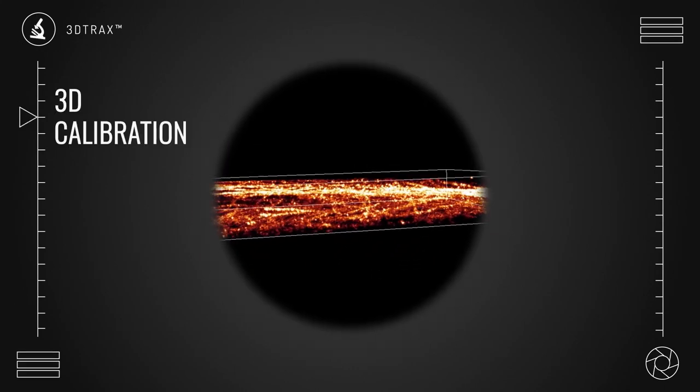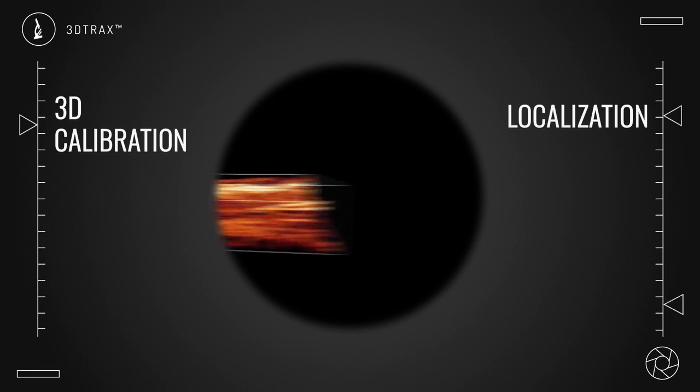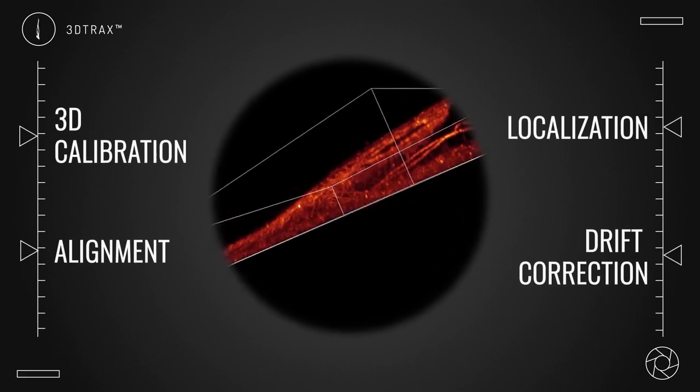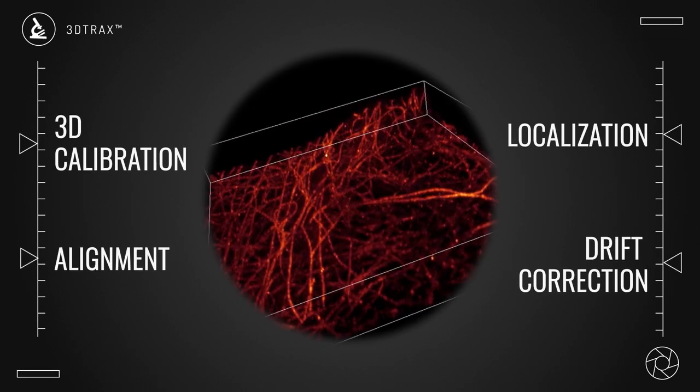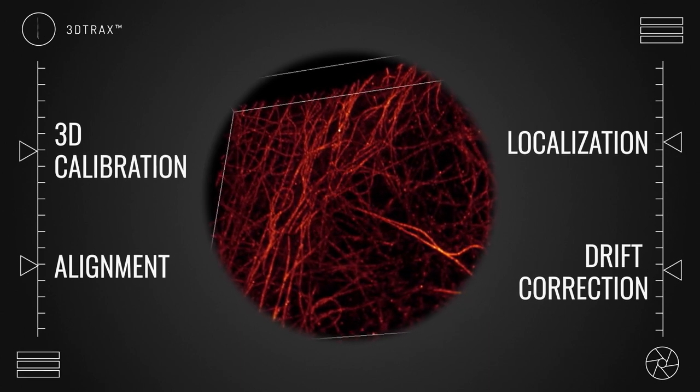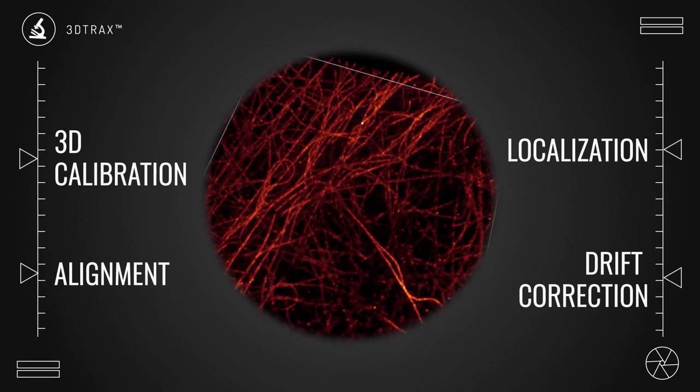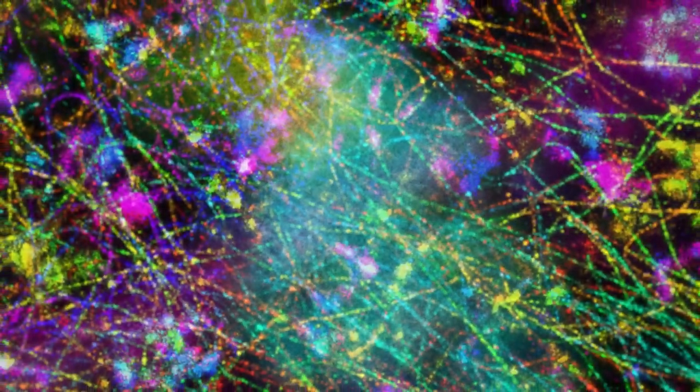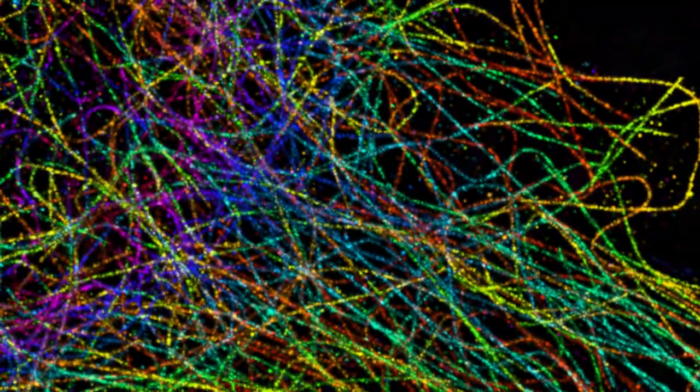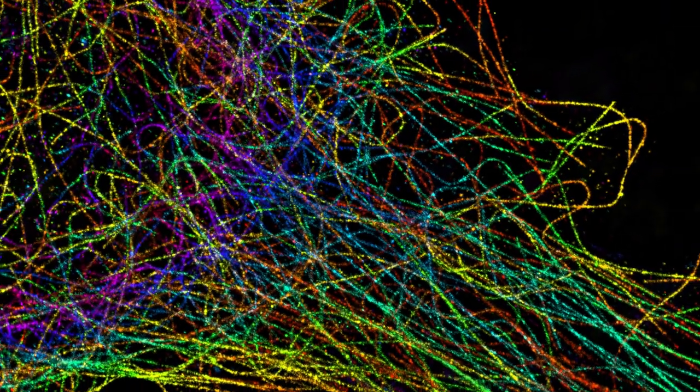It automates 3D calibration, localization, drift correction, and alignment to enable super-resolution image reconstruction and particle tracking with unprecedented precision and depth. By drawing more data from a single snapshot, the spindle lowers phototoxicity and delivers the sharpest, most precise image possible.